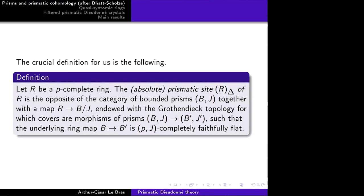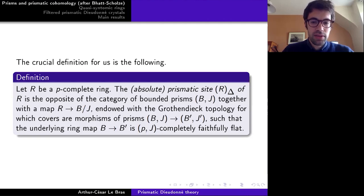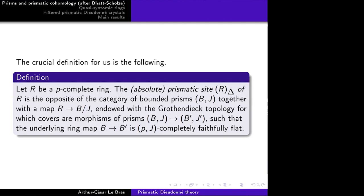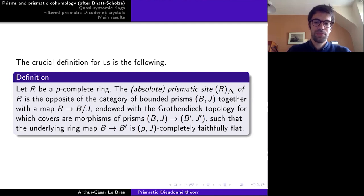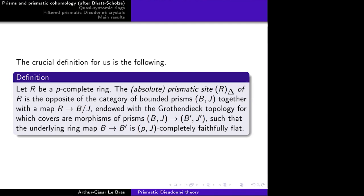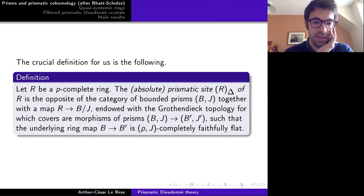A clarification on the definition of morphisms of prisms: in a morphism of prisms, one requires J maps into J', and in fact J generates J'. For the topology, one also needs finite disjoint unions of covers — if B is a product of situations, taking all of them gives a covering by N things. So the topology should be generated by these covers.